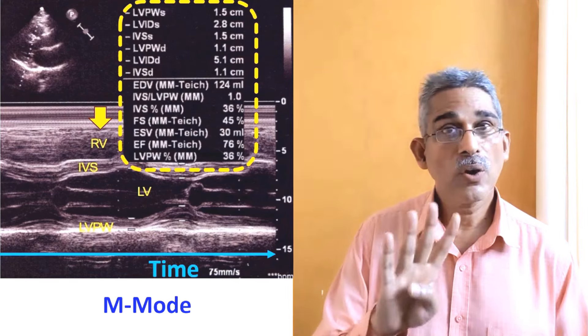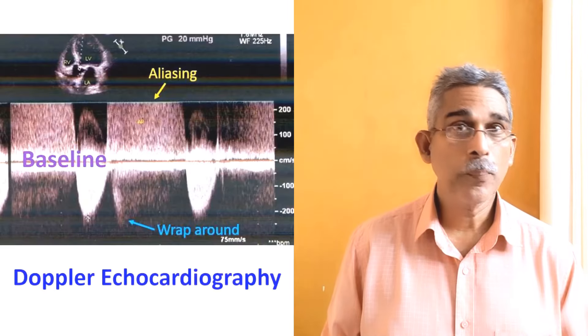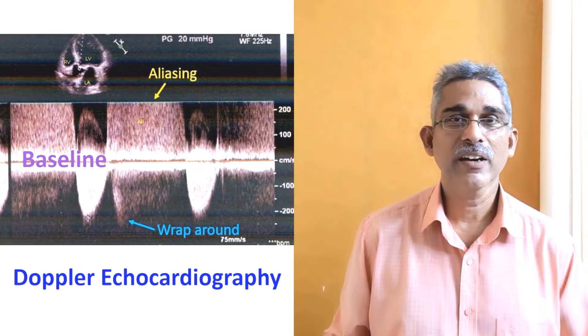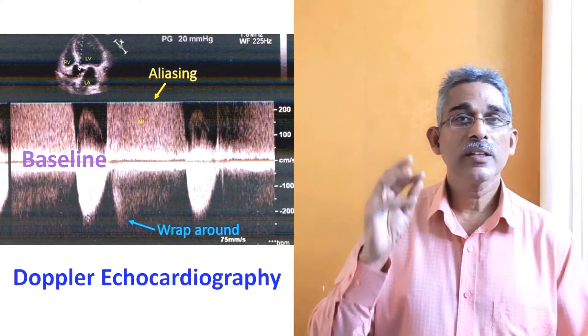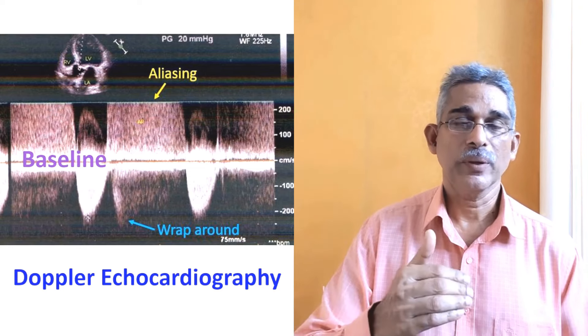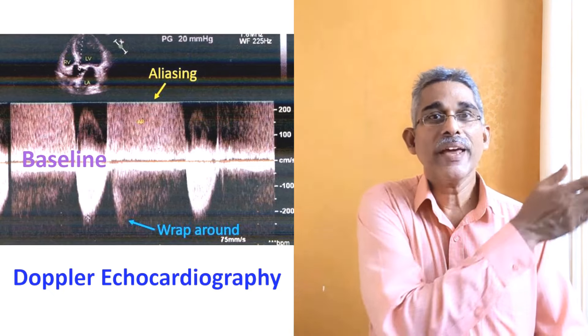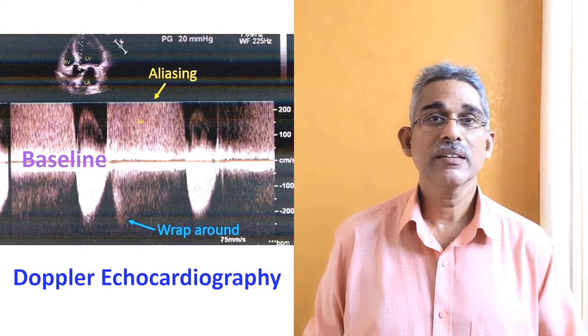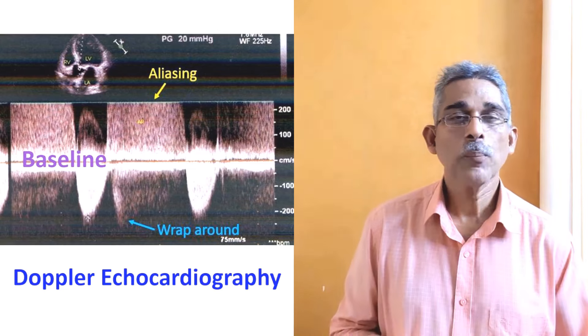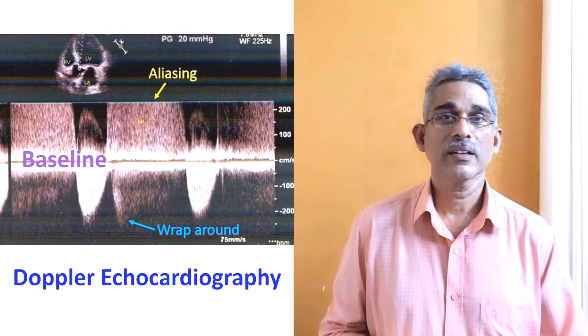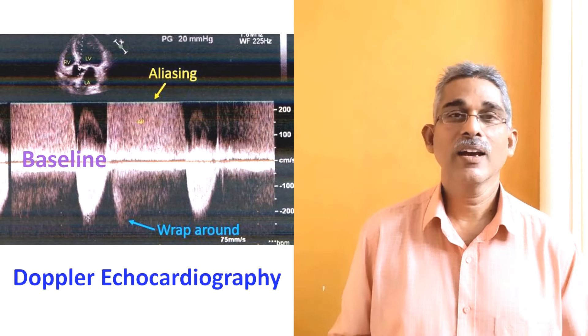Live 3D is known as 4D echocardiography. There is another mode known as Doppler echocardiography, which measures the Doppler shift. You may have noticed that when sitting in a railway station, as a train approaches you the whistling sound has a different frequency, and when it moves away the frequency changes. This is known as the Doppler shift. When this change in frequency is detected, you can find out the velocity of the object. Similarly, an ultrasound beam is focused on red blood cells in the heart and blood vessels.